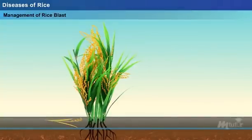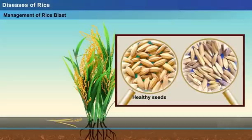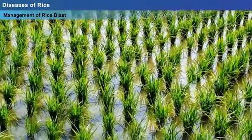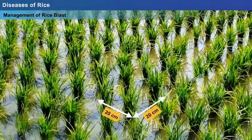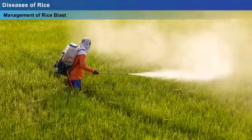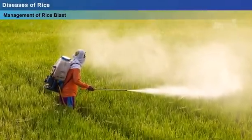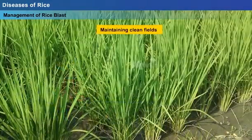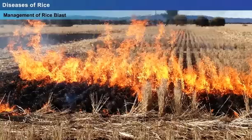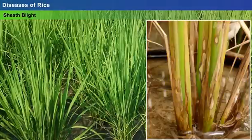Rice blast in rice crops can be managed by segregating healthy seeds from diseased crop and sowing them as resistant varieties, by following recommended spacing during planting (that is 20 x 20 cm) to enhance aeration and light penetration, by applying recommended levels of fertilisers because excessive usage can increase the intensity of blast infection, by maintaining clean fields, and by burning or burying diseased plant material.